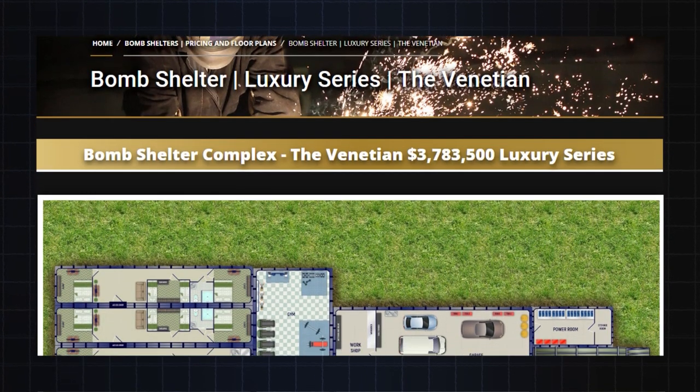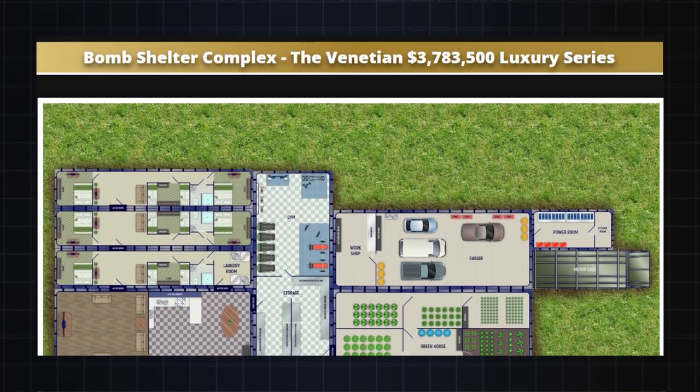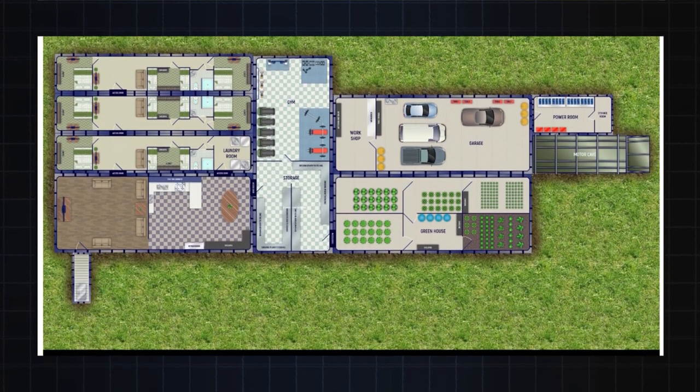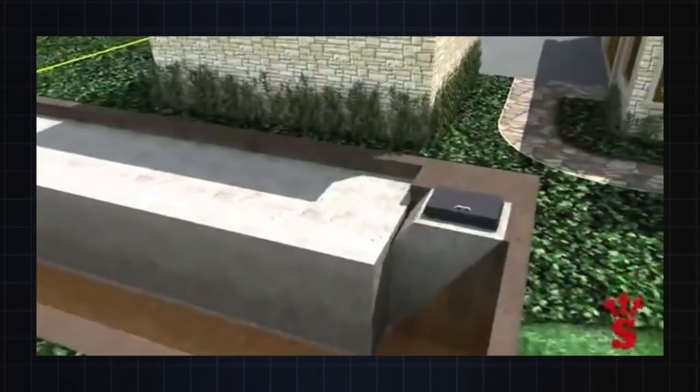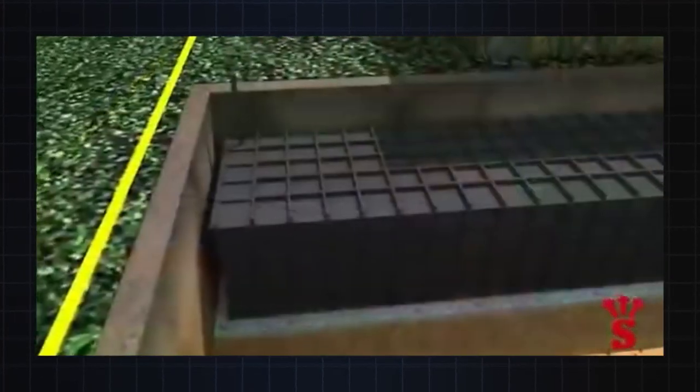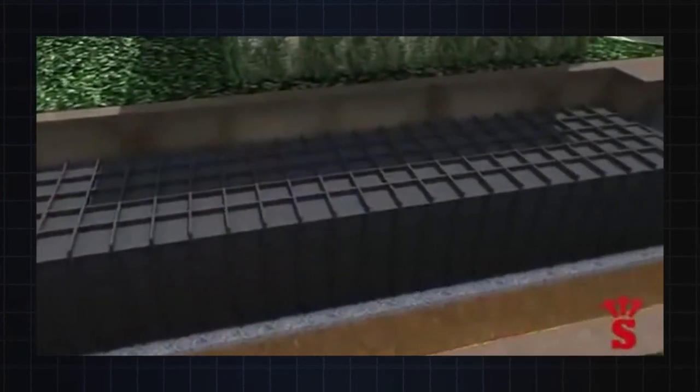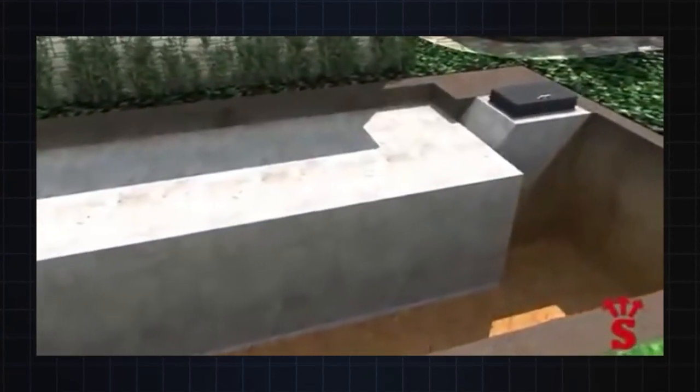Rising S sells products like the Venetian, a charmingly named property that sounds like a Mediterranean villa. But is, in fact, an underground bolt hole reinforced with plate steel and designed to defend against a whole host of disasters, whether man-made or otherwise.